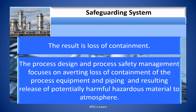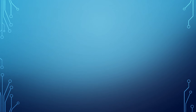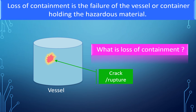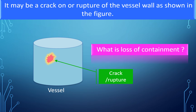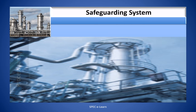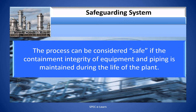The result is loss of containment. Process design and process safety management focuses on averting loss of containment of process equipment and piping and the resulting release of potentially harmful hazardous material to atmosphere. Loss of containment is the failure of the vessel or container holding the hazardous material — it may be a crack or rupture of the vessel wall. The process can be considered safe if the containment integrity of the equipment and piping is maintained during the process.